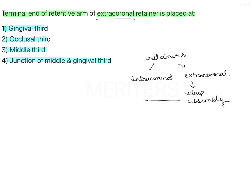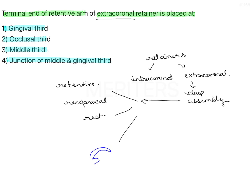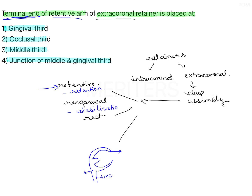In a clasp assembly, you have a few components: the retentive terminal, the reciprocal, and a rest. Ideally it would look like one retentive arm, one rest, and one reciprocal arm, together connected by a body to a minor connector. The question is about the terminal end of the retentive arm — where should this part of the extracoronal retainer be located? The function of the retentive arm is to provide retention, the reciprocal arm provides stabilization, and the rest is for support.